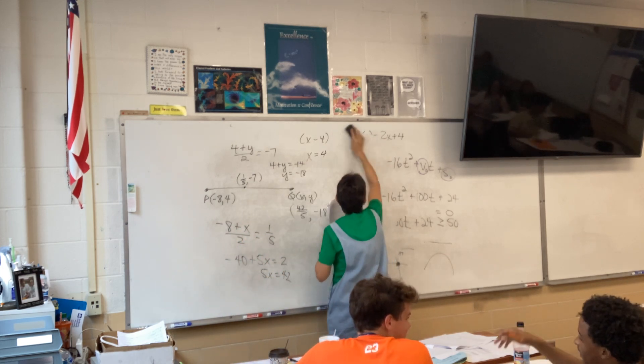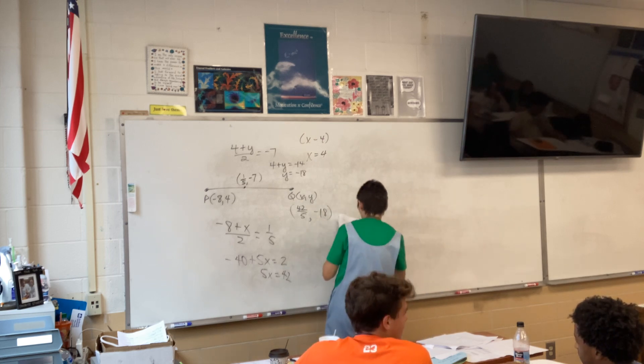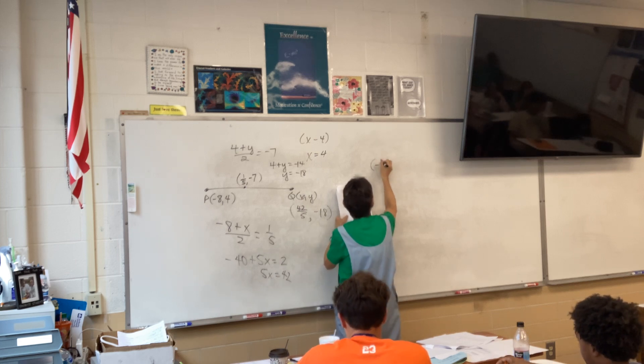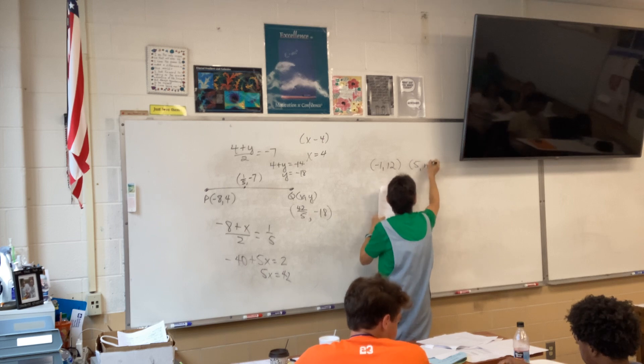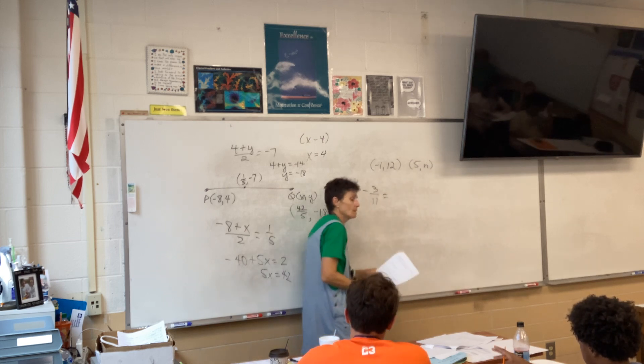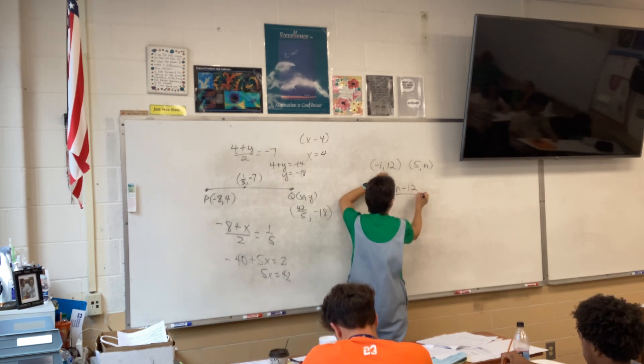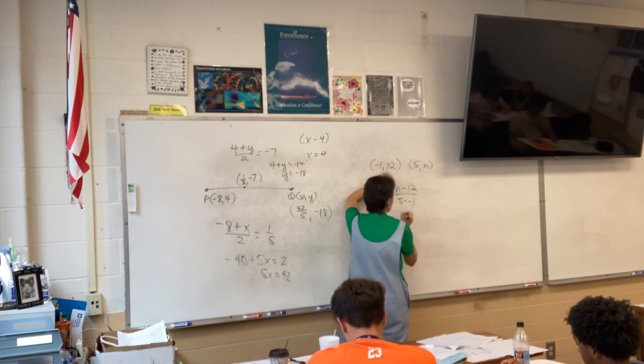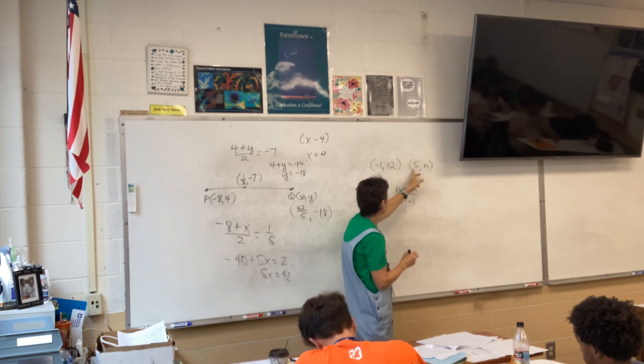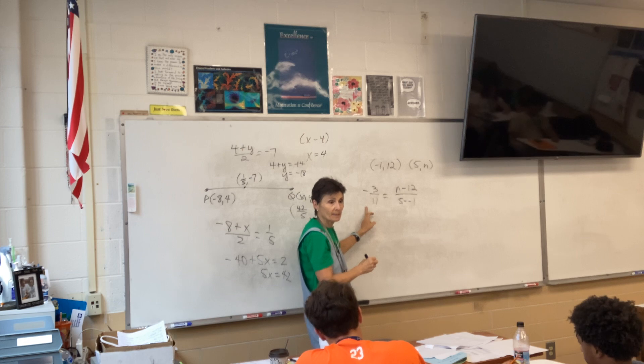Doesn't matter. Somehow, that's the answer you've got to come out with. All right, what else? Let's find N, so that the line through negative 1, 12 and 5, N has a slope of negative 3 elevenths. How do we find slope? Y minus Y over X minus X? Sure.